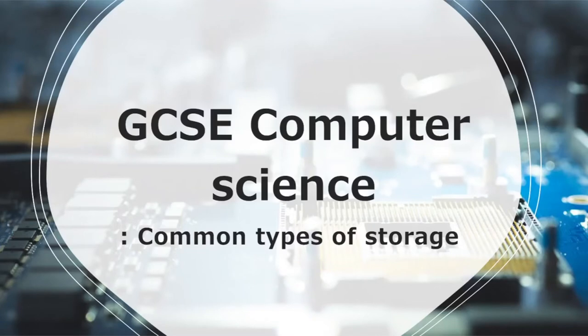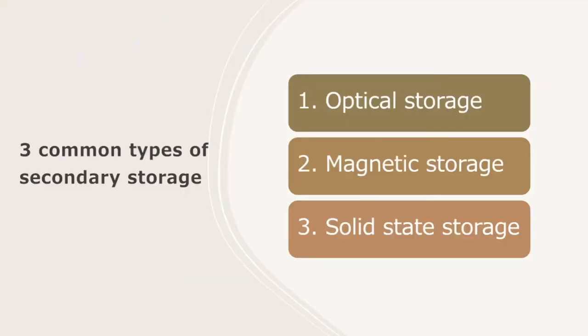Hello everyone, today I'm going over GCC Computer Science and I'll be focusing on the common types of storage. There are three main types of secondary storage: optical storage, magnetic storage, and solid state storage.